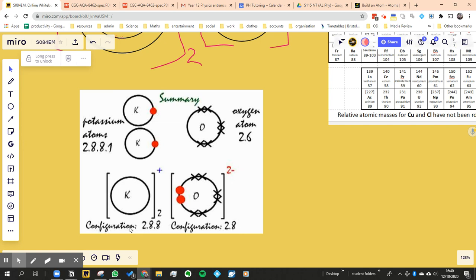So you can see down here the configurations are now all full shells - 2.8.8, so it's lost that one, and then 2.8, so it's filled up that second shell.